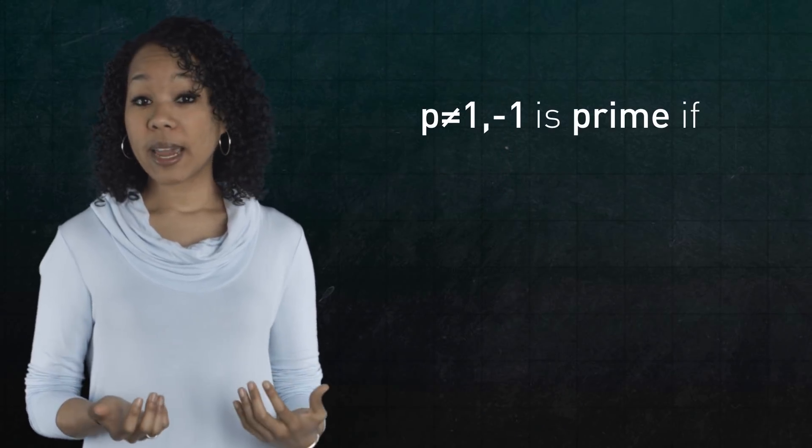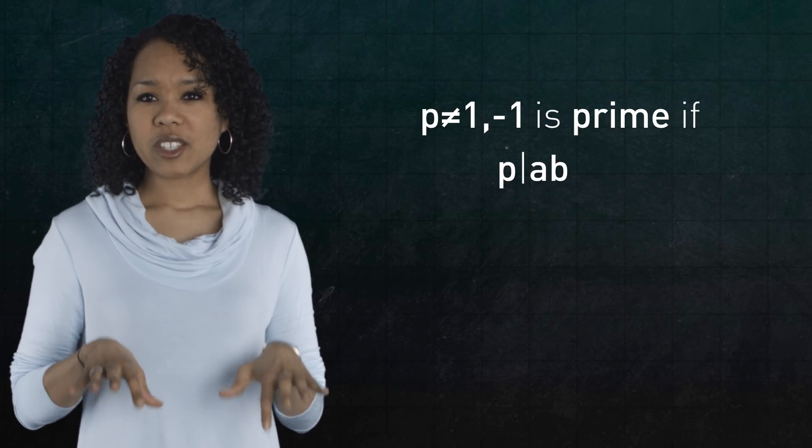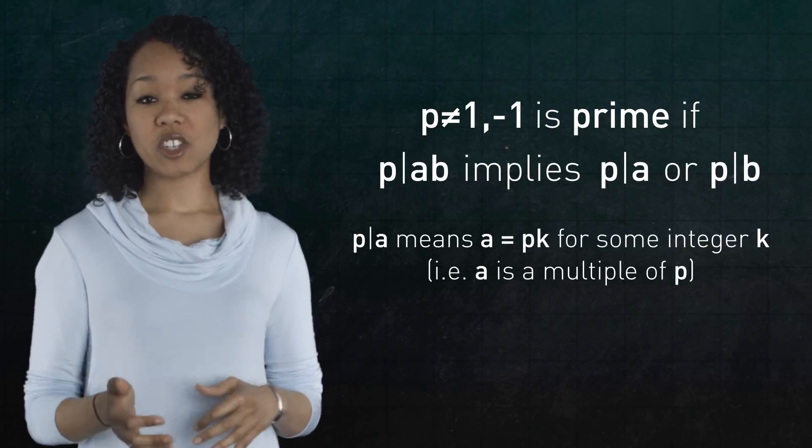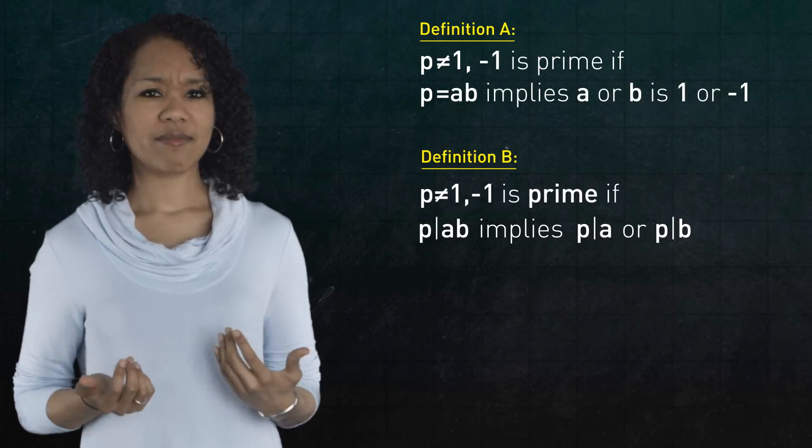But the prime numbers satisfy another definition that maybe you haven't thought about. An integer p is prime if whenever p divides a product of two integers, then p divides exactly one of those two integers. Let's call this definition b. And let's think about it. Does it sound plausible?